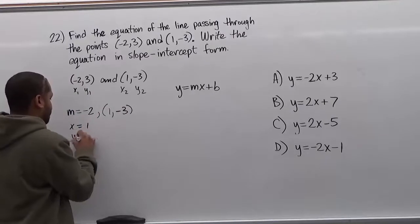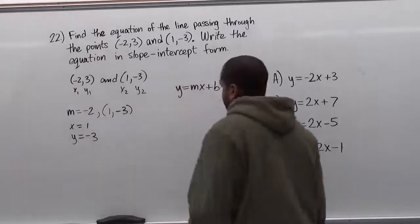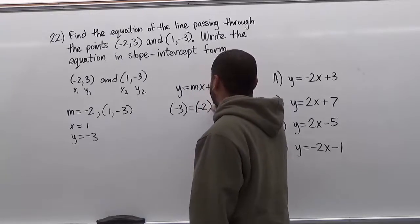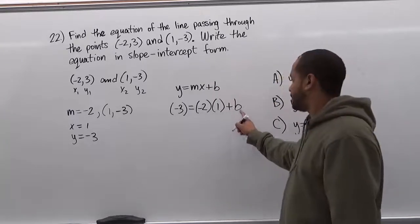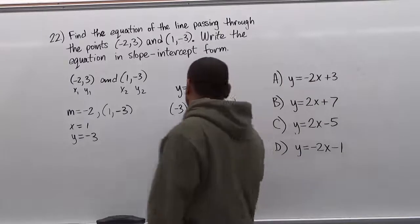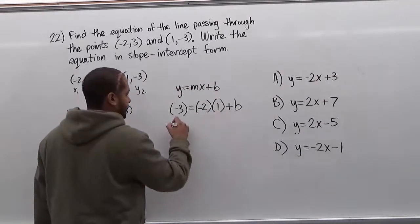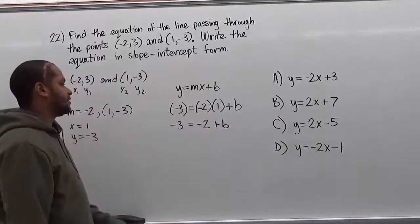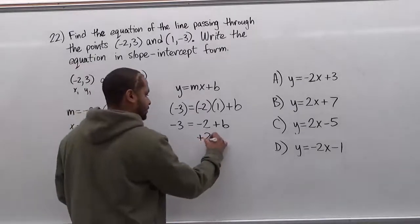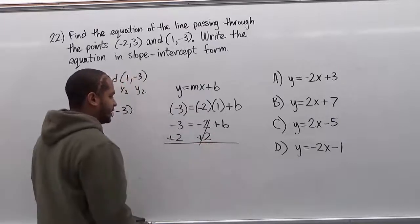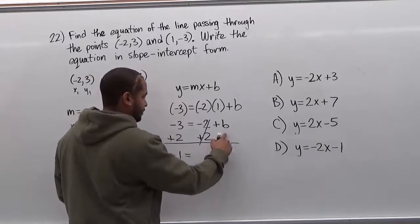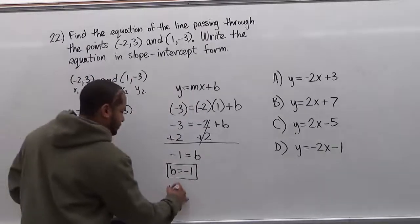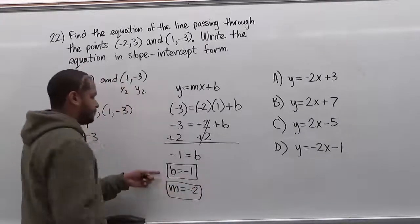Substituting into y equals mx plus b: my y value is negative 3, my m value is negative 2, my x value is positive 1, and b is what I'm solving for — the y-intercept. Distributing: negative 3 equals negative 2 times 1, which is negative 2, plus b. Adding 2 to both sides to isolate b, the negative 2 cancels, and negative 3 plus 2 equals negative 1. So b equals negative 1.